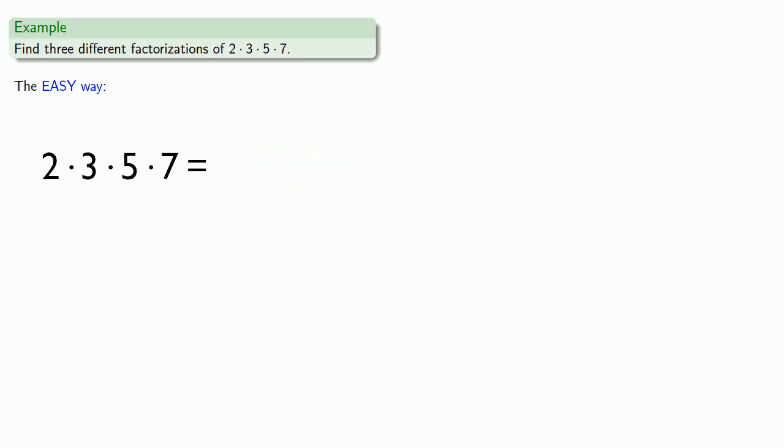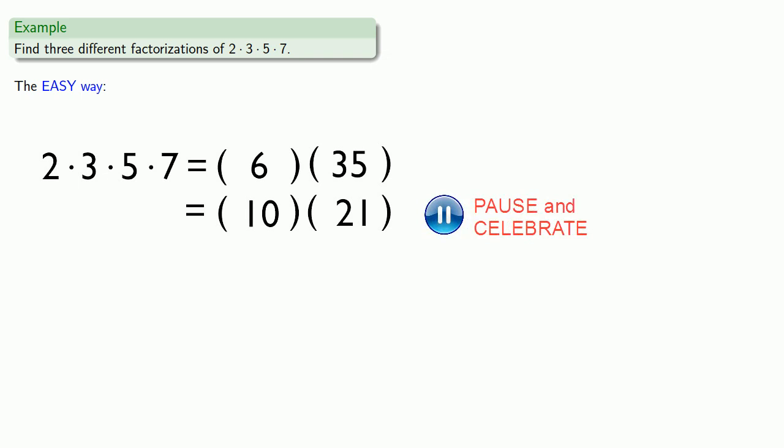So maybe we'll keep the 2 and 3 together, and the 5 and 7 together. And carrying out the multiplications, that gives us 6 times 35 as one possible factorization. Or maybe we'll group the 2 and the 5 and the 3 and the 7. And so 10 times 21 is another factorization. And maybe we'll try 2, 7 and 3, 5. And so 14 times 15 is a third factorization.